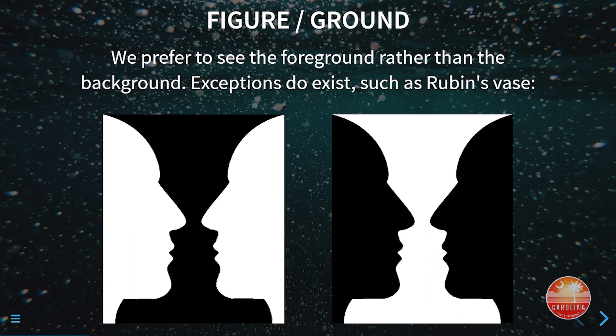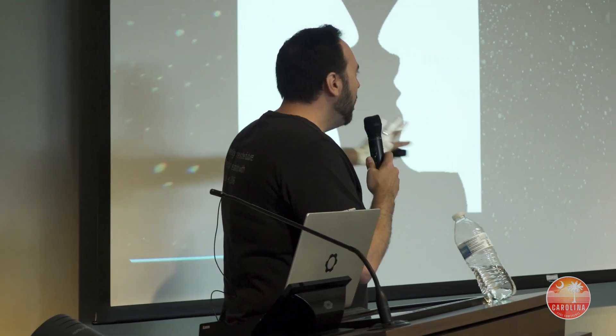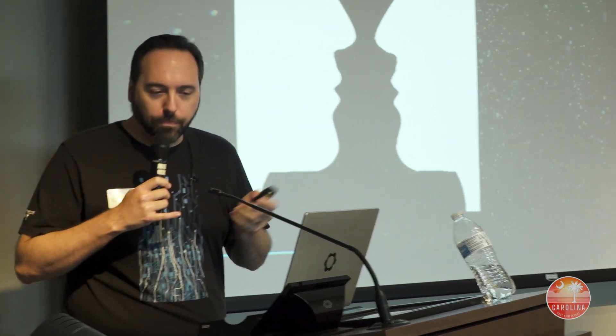On a background which is a little bit biased, depending on which color is which, you're going to see — for example — the faces here and the vase there, because a dark background indicates to you that the black color is probably part of the ground.